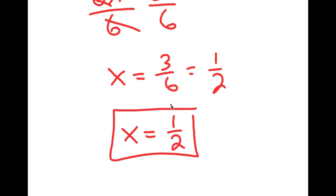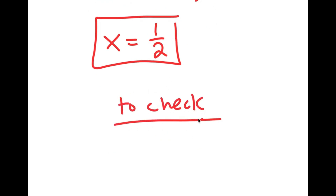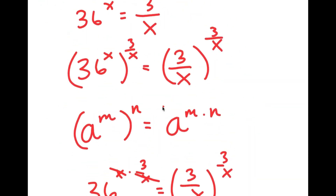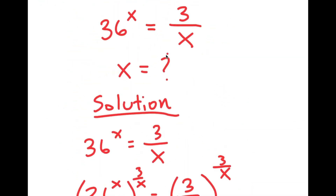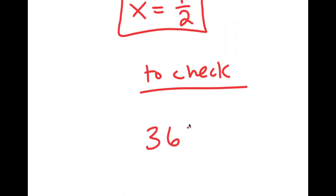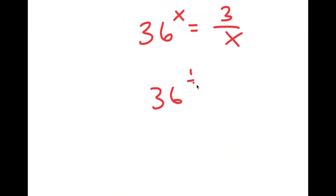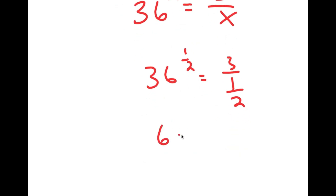To check: my equation was 36 to the power of x is equal to 3 over x. With x equals 1 half, I get 36 to the power of 1 half is equal to 3 over 1 half, which turns into 6 is equal to 6. ✓